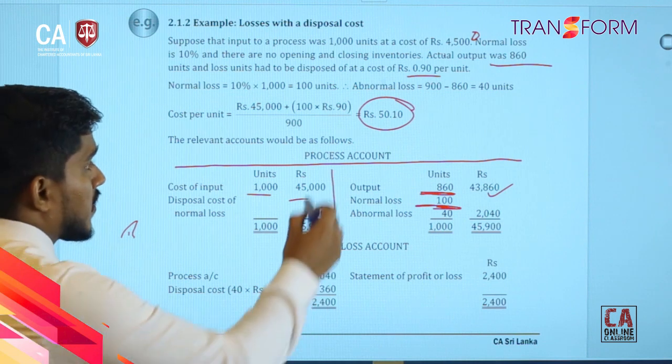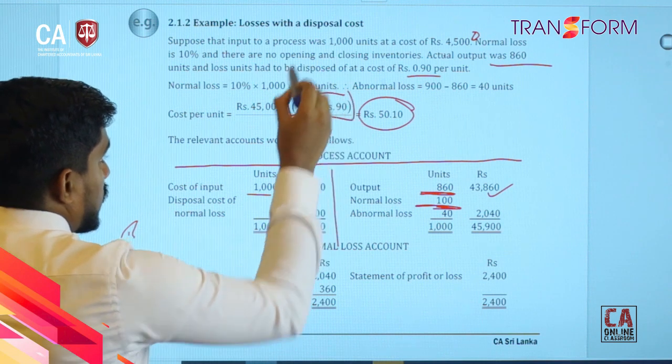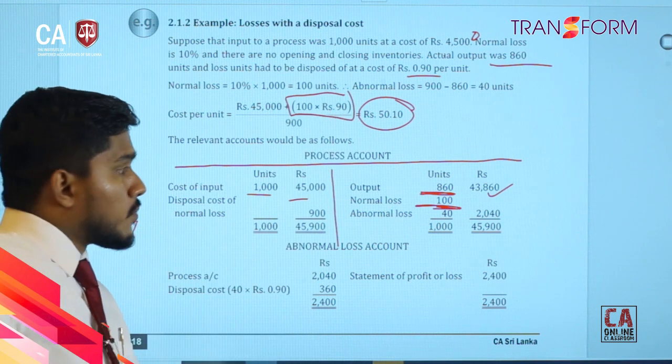Apart from that, you need to think about this part: to dispose of that normal loss, you need to incur another 90 cents per unit.